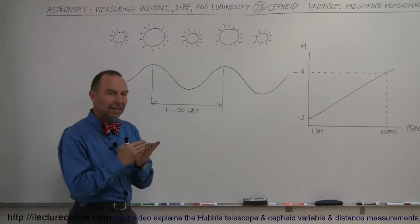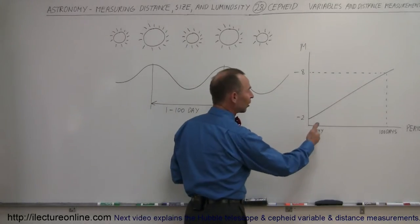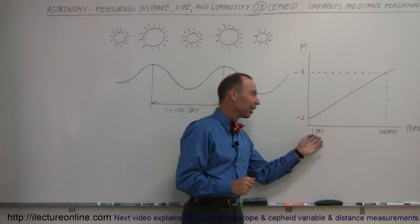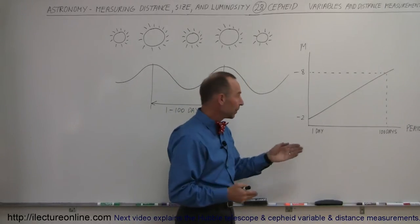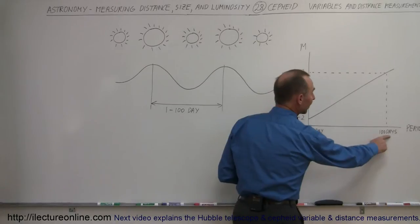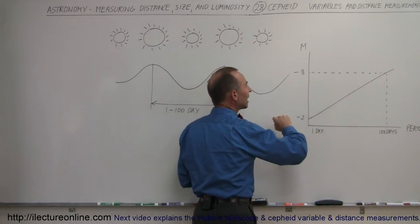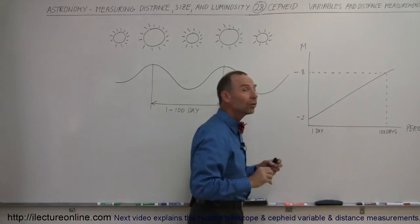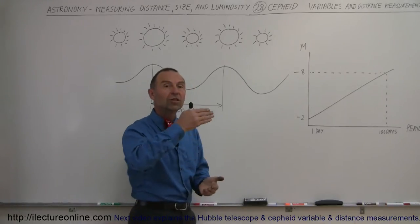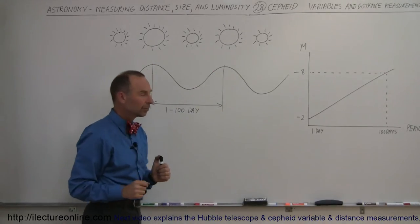What's so great about Cepheid variables is that their luminosity is linearly proportional to the periodicity of their pulsations. Cepheid variables that vary in luminosity over about one day have an absolute magnitude of about minus 2, while those that vary over a period of 100 days have an absolute magnitude of minus 8. The linearity between those two values is very accurate.